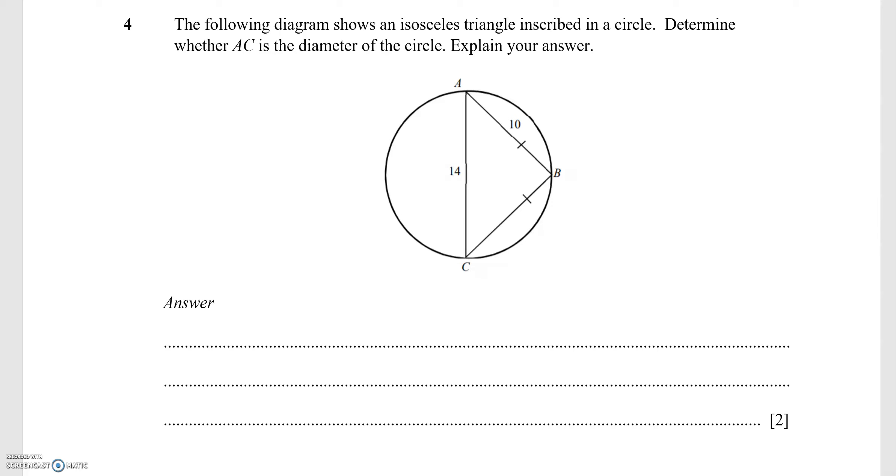The following diagram shows an isosceles triangle inscribed in a circle. Determine whether AC is the diameter of the circle. Explain your answer.